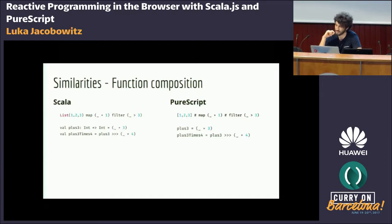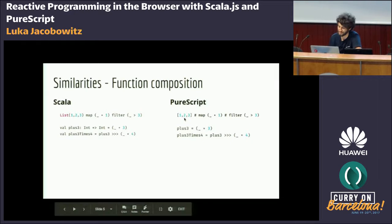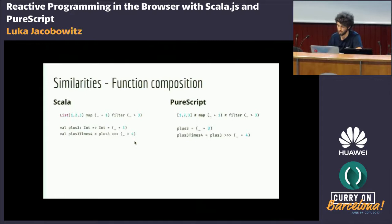In PureScript we have the hashtag operator, which is basically an infix operator. The one, two, three is actually the last parameter of the map function. Map usually has first the function and then the actual array or functor. This allows us to write it in the subject-verb-object style that most of us are used to from object-oriented or similar styles of code.